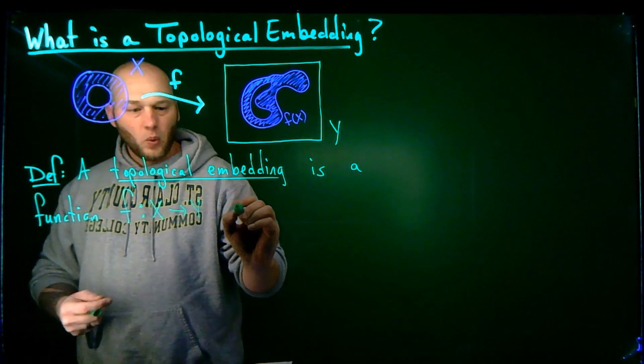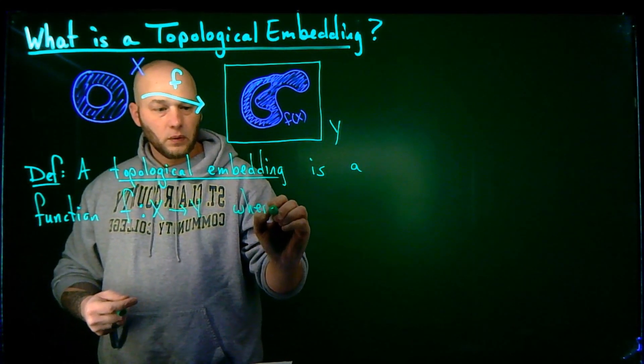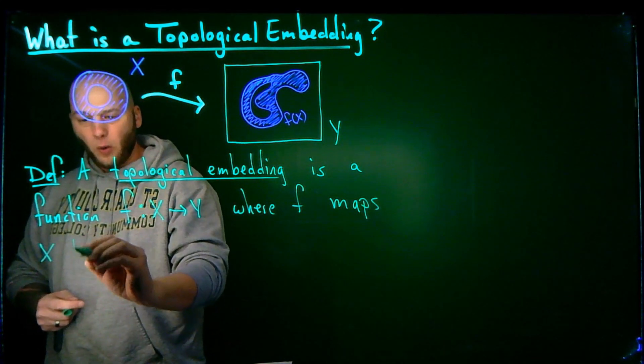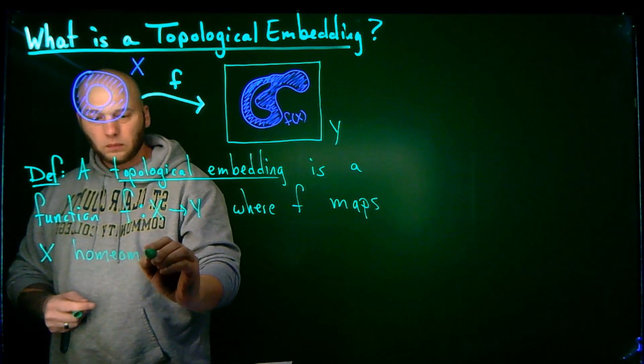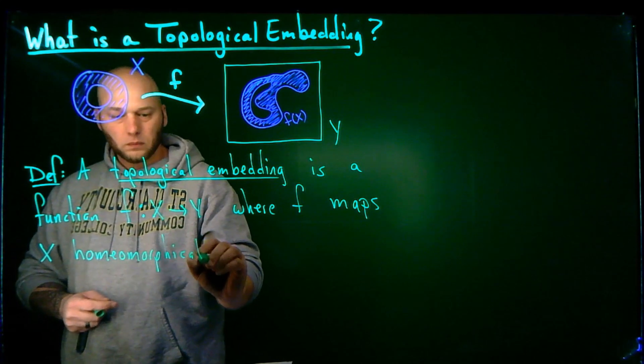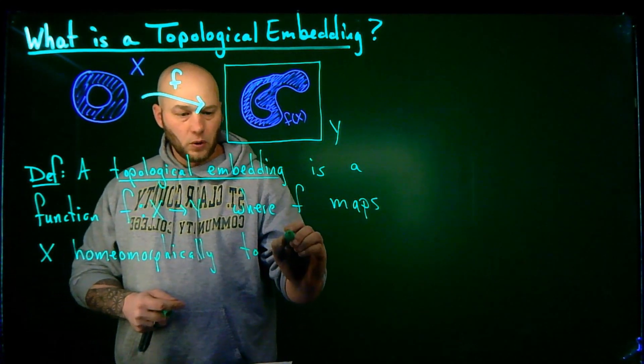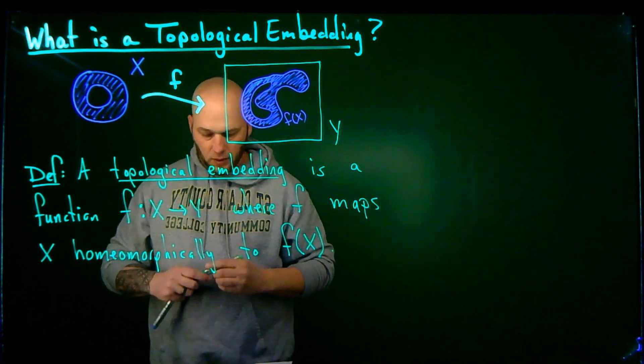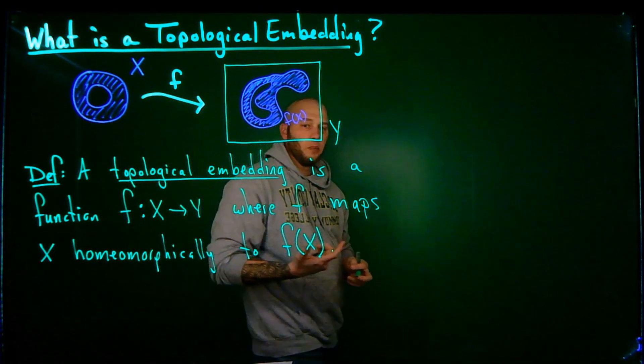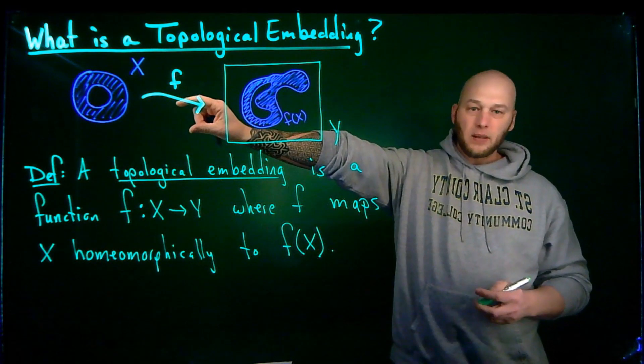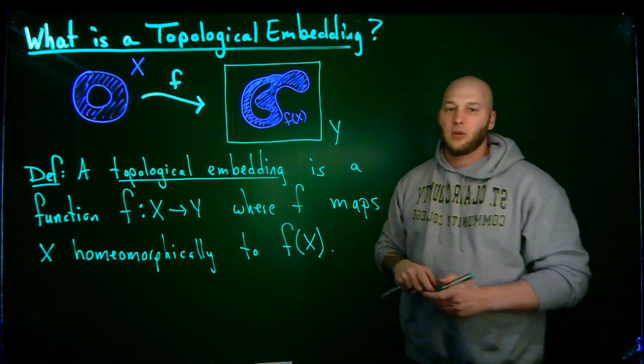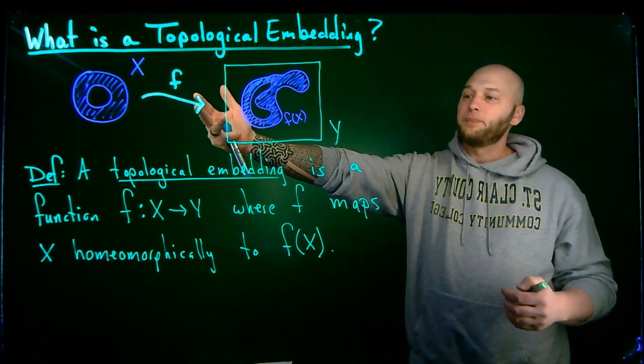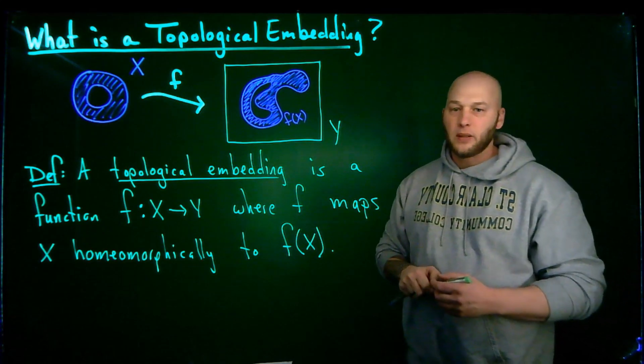where F maps X homeomorphically to F of X. In other words, F is a homeomorphism between the domain space X and its image F of X. It might not be a surjection onto all of Y, but it's going to be a homeomorphism onto its image.